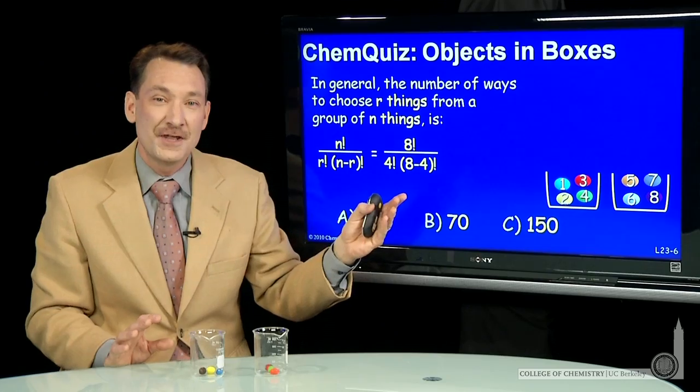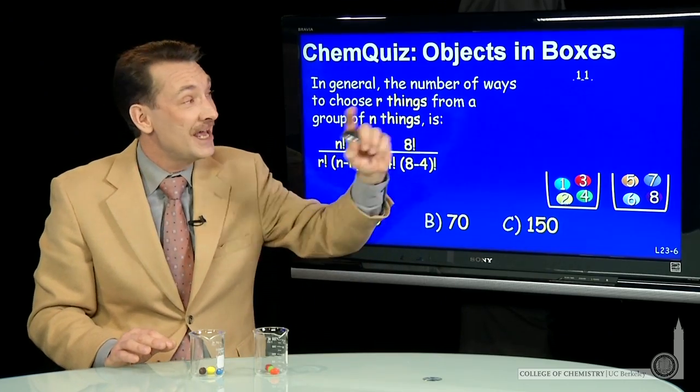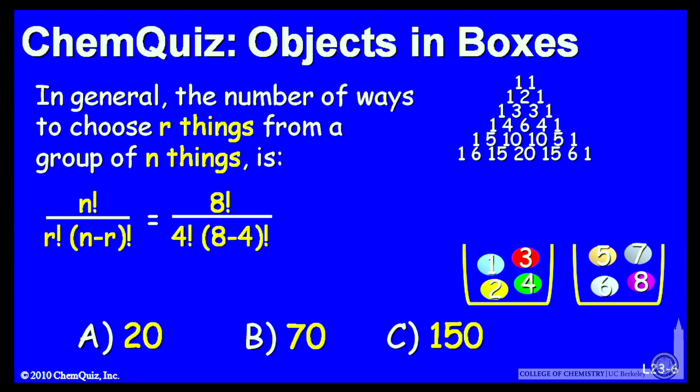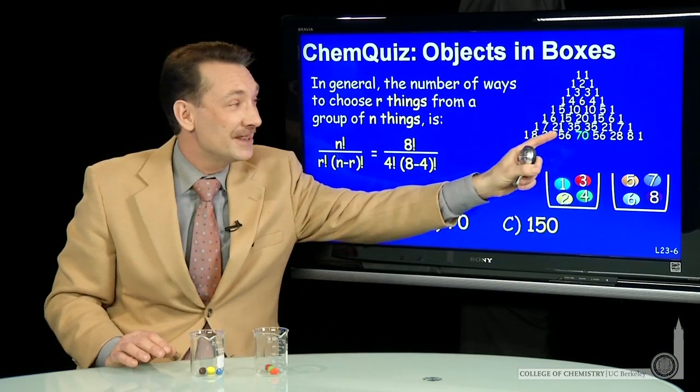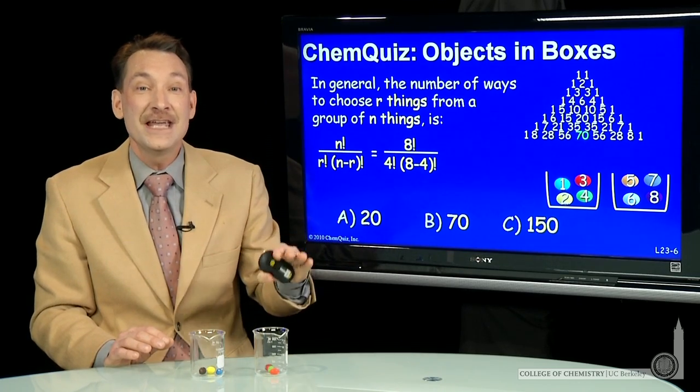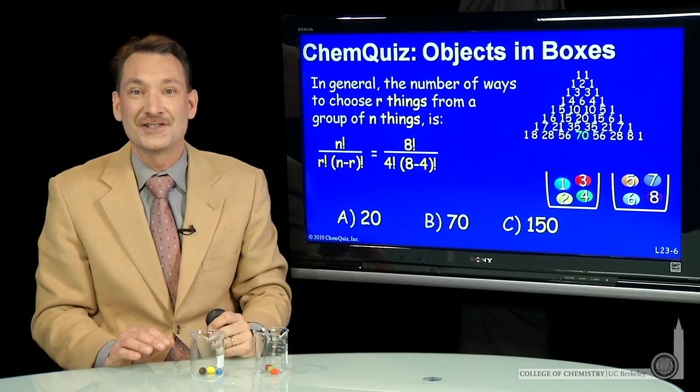But we don't have to do that. We know that we can extend our Pascal's triangle that we had from six, seven, eight things. And when I get up to eight things, this number in the center is the number of ways to arrange equal particles on each side.